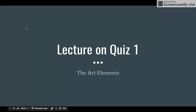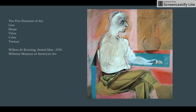Hi, everybody. This is going to be a short lecture on quiz one. I want to demonstrate to you what I'm asking you to do. You're going to be looking at a work of art and describing how that work of art can encompass the five elements of art. I'm going to give you an example.